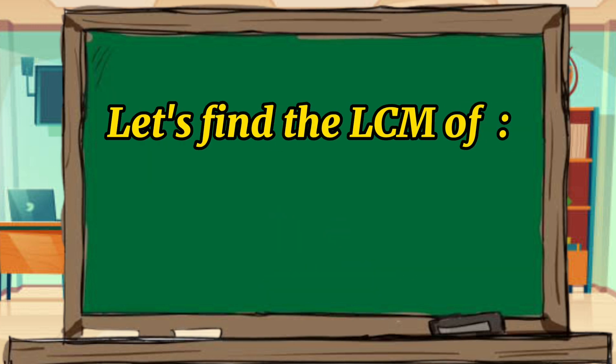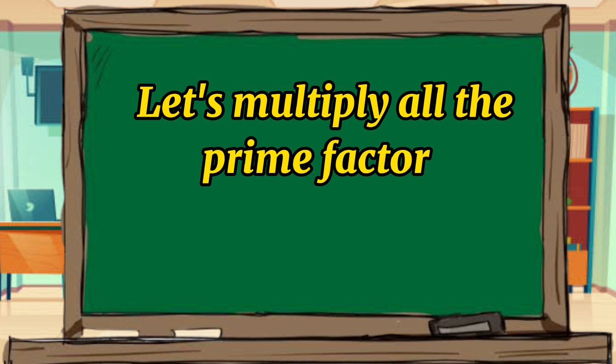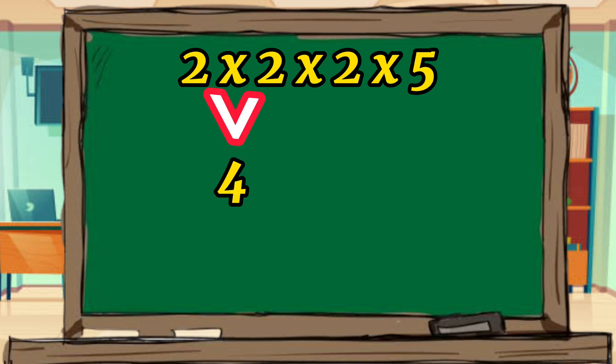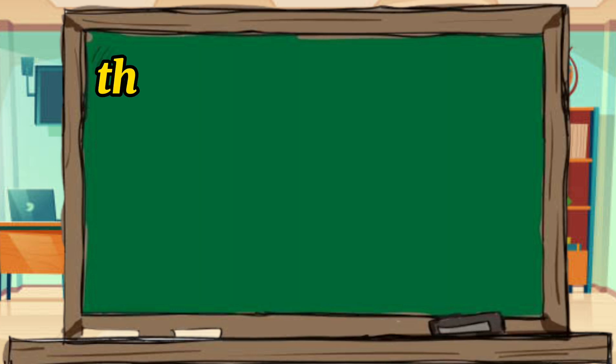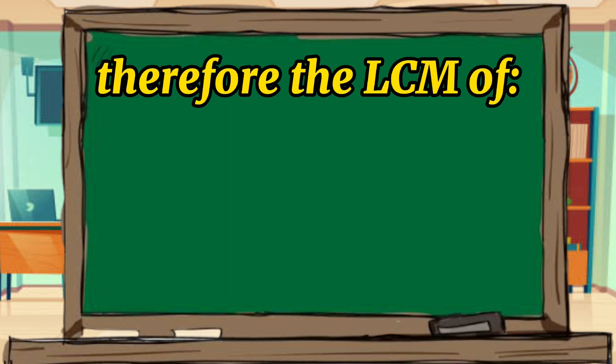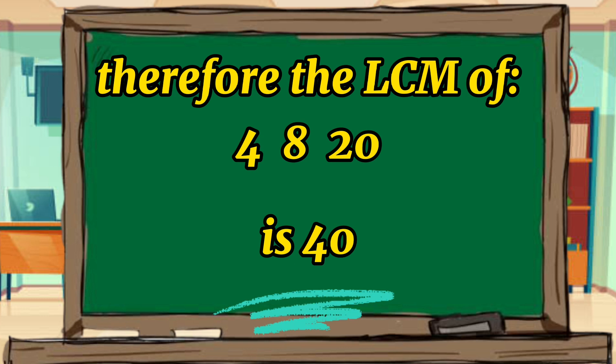Now, let's find the LCM, or the least common multiple of 4, 8, and 20. Let's multiply all the prime factors. 2 times 2 equals 4, 4 times 2 equals 8, and 8 times 5 is 40. Therefore, the LCM, or the least common multiple of 4, 8, and 20 is 40.